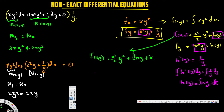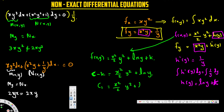Now we write the complete solution: f(x,y) = x²y²/2 + ln(y) + k = c. Bringing k to the other side, c − k equals x²y²/2 + ln(y). Combining the constants c − k into a new constant c₁, our final solution is: c₁ = x²y²/2 + ln(y).